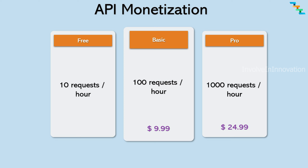Rate limiting also helps in monetizing the API. Typically, APIs are monetized based on restrictions on the number of requests made per hour. The user buys an API key which passes along with the request and is used to throttle requests. For example, there can be three plans: a free plan with 10 requests per hour, a basic plan with 100 API calls per hour, and a pro plan with 1000 requests per hour.